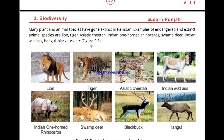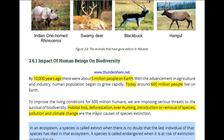There was a time when many species that were present in Pakistan became either endangered or extinct. These include the lion, tiger, Asiatic cheetah, Indian wild ass, Indian one-horned rhino, swamp deer, blackbuck, and hangul.